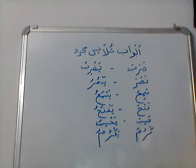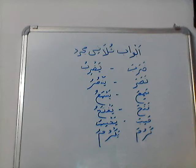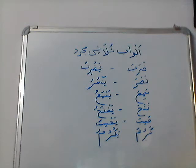In previous lessons, we talked about Sulasi Mujarrad of Al and their three patterns. Now we will extend it further. So far, we have discussed past tense words. All Arabic words originally begin with past tense, which is called Feli Madhi. Arabic grammarians have made a group of six words that form the basis of changing words into present and future tense.